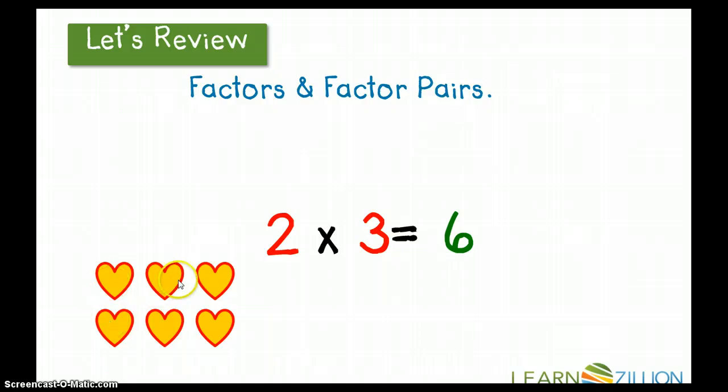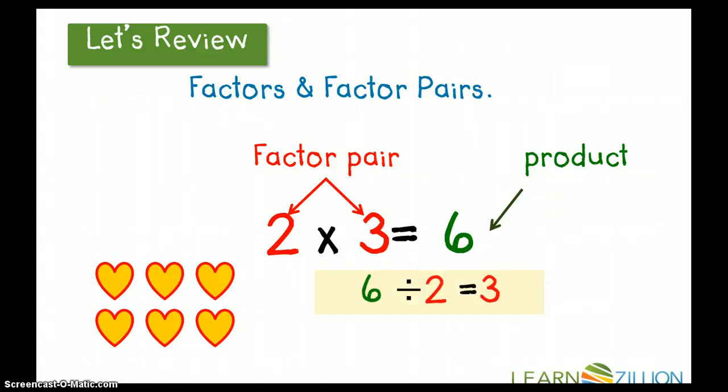This is my factor pair, my two and my three. My product, the answer to this multiplication problem, is six. I could also write this using an inverse operation of division: six divided by two equals three, or six divided by three equals two.